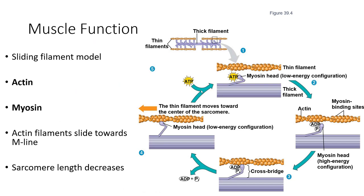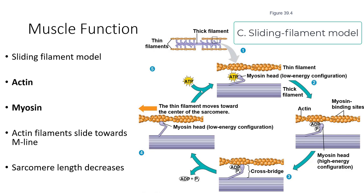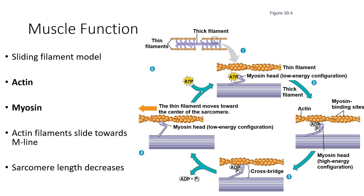So how do muscles work? We're going to look at the sliding filament model. Where actin and myosin overlap, the myosin heads are bound to ATP in their low energy configuration. When ATP hydrolyzes, you get ADP and phosphate, and this moves the myosin head from its low energy configuration to a high energy configuration. If it is able to bind to actin's myosin binding sites, it will form a crossbridge and then return to its low energy configuration. As it returns to its low energy configuration, the actin filament moves toward the center of the sarcomere and the sarcomere length decreases. This can be repeated as ATP binds to the myosin head, now in a low energy configuration, and the cycle starts again.